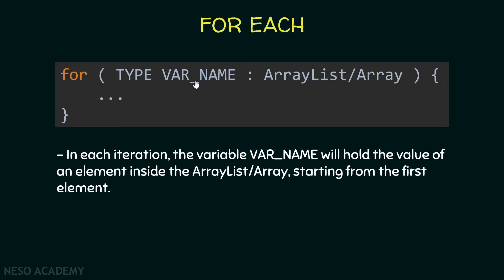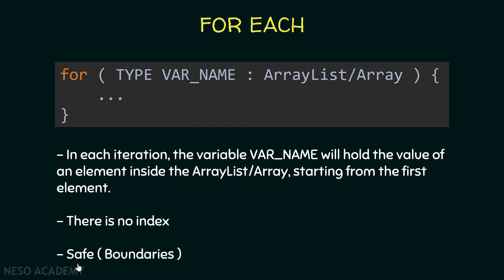This loop will keep iterating until we reach the end of the array list or the array. Since we didn't declare a variable i, we are not using an index to access the elements. So we are safe not to exceed the boundaries of the array list or the array.